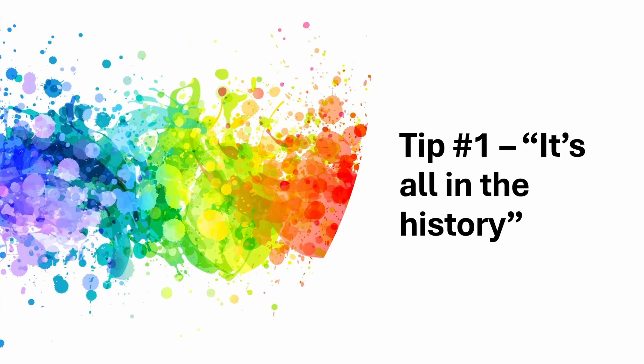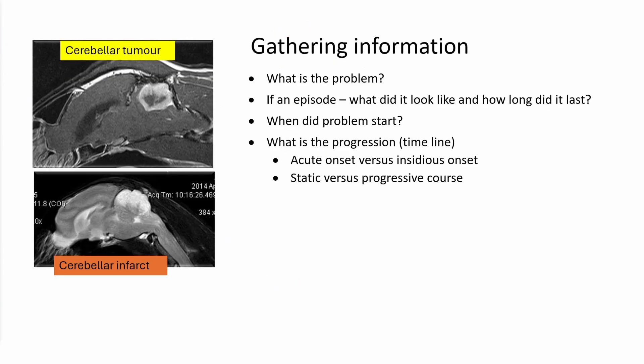The first part of making a good neurological assessment is taking a good history and asking the right questions. Things that are obvious to most vets: what is the actual problem? If it was an episode, what did it look like and how long did it last? When did the problem start and what is the progression, the timeline? That's very important in neurology.